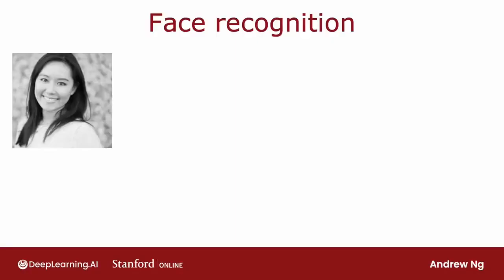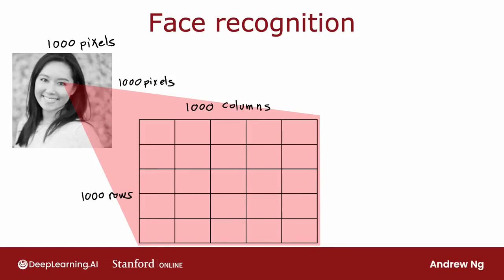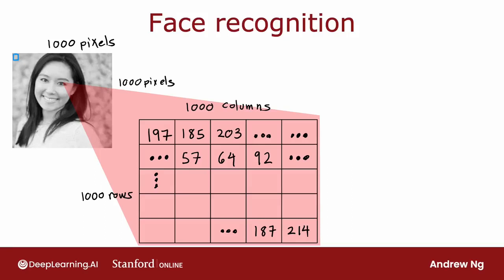If you're building a face recognition application, you might want to train a neural network that takes as input a picture like this and outputs the identity of the person in the picture. This image is 1,000 by 1,000 pixels, and so its representation in the computer is actually as a 1,000 by 1,000 grid, also called a 1,000 by 1,000 matrix of pixel intensity values. In this example, my pixel intensity values go from 0 to 255, and so 197 here would be the brightness of the pixel in the very upper left of the image.